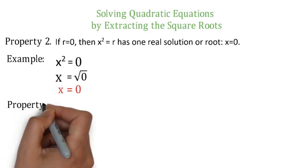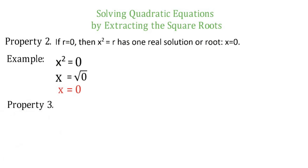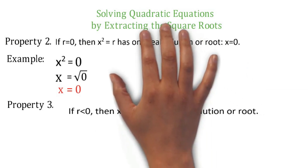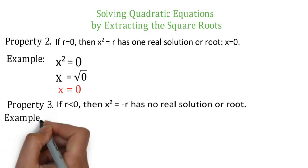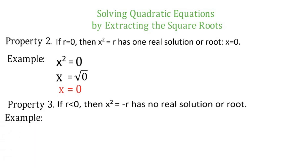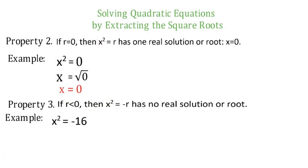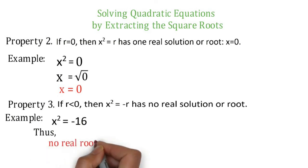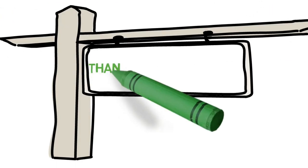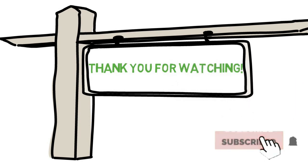Property number 3: if r is less than 0, then x squared is equal to negative r has no real solution or root. For example, x squared is equal to negative 16. If r is negative, we have no real roots or solutions. Madali lang po yung property 2 at 3. Thank you for watching, see you on my next video tutorial on math lessons.